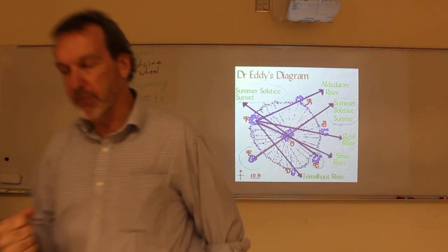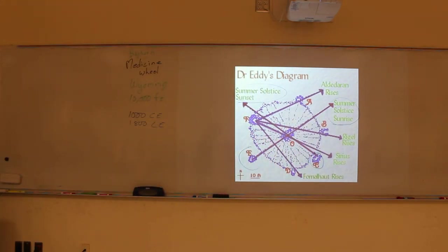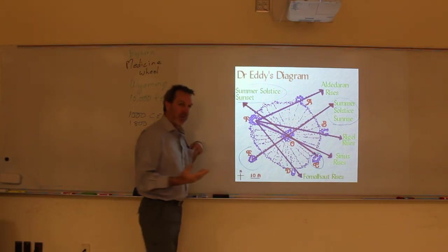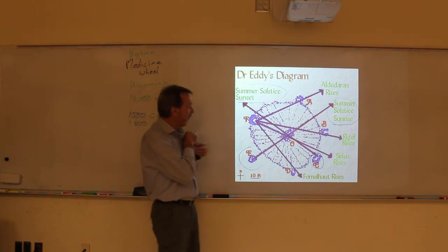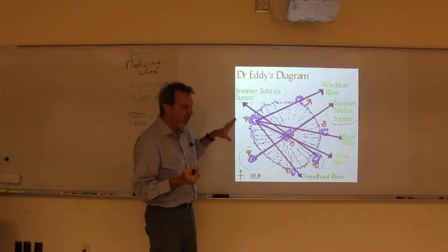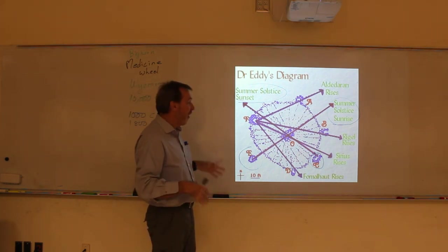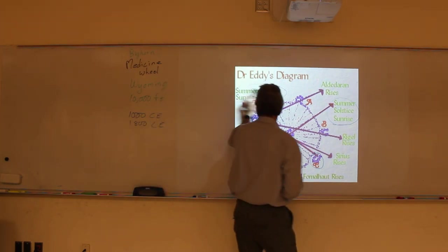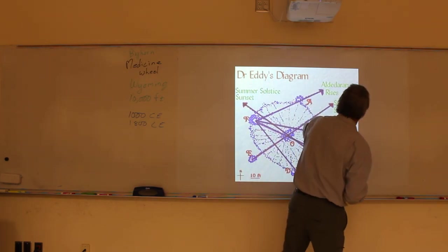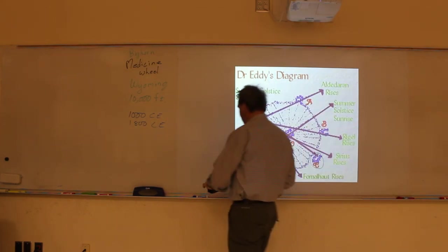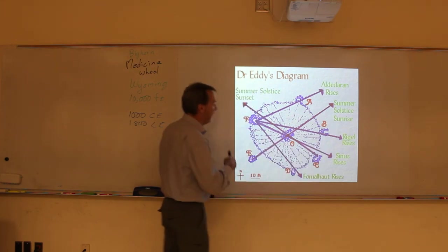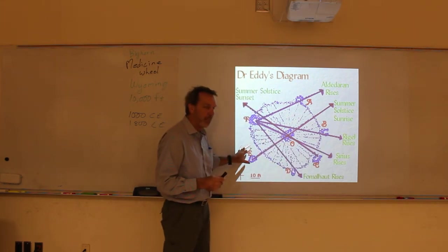Now, are there other medicine wheels? Yes, there are many more medicine wheel places. This is not the only one that exists. And so they looked and said, if this one has astronomical alignment, do all the medicine wheels have astronomical alignment? Well, they don't. And so that's why some archaeoastronomers tend to speculate that maybe these are just happenchance and it wasn't really planned that way.